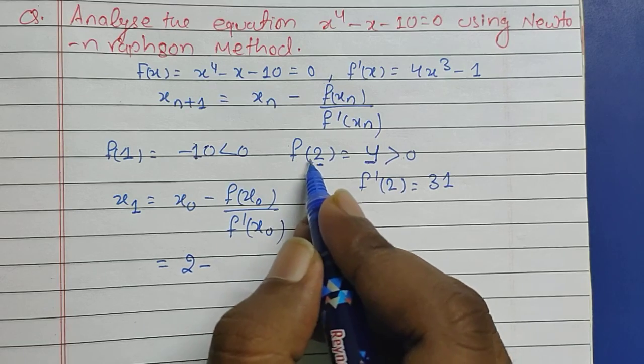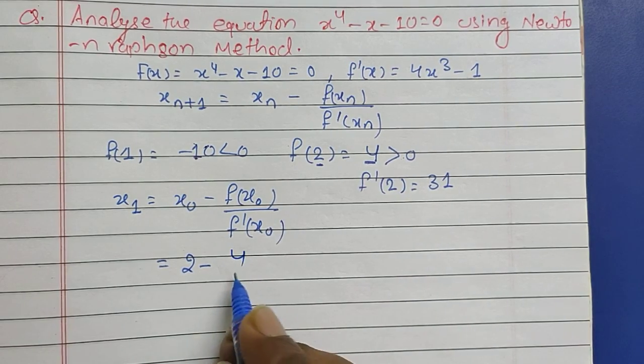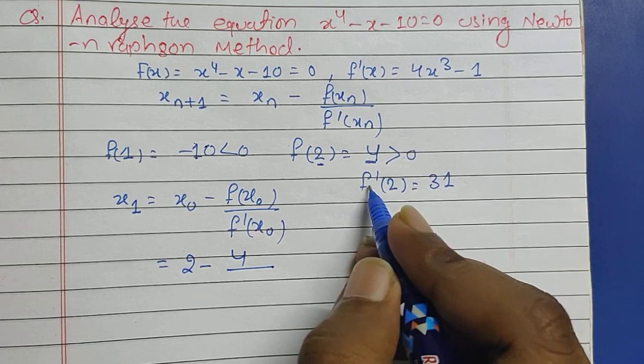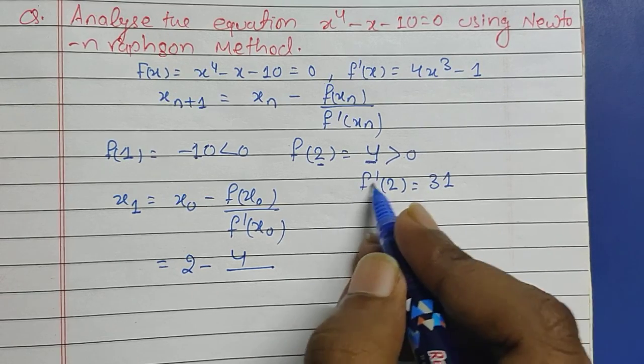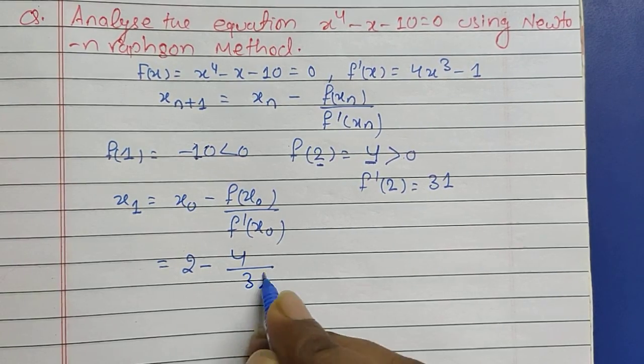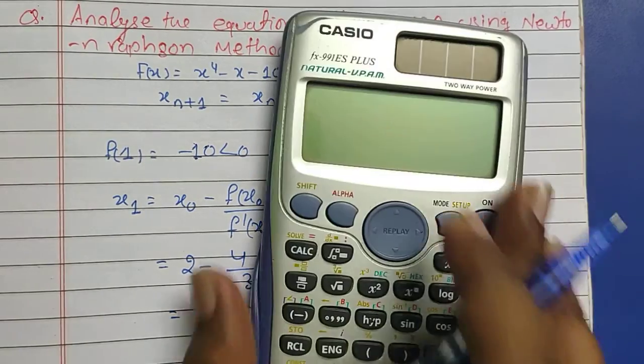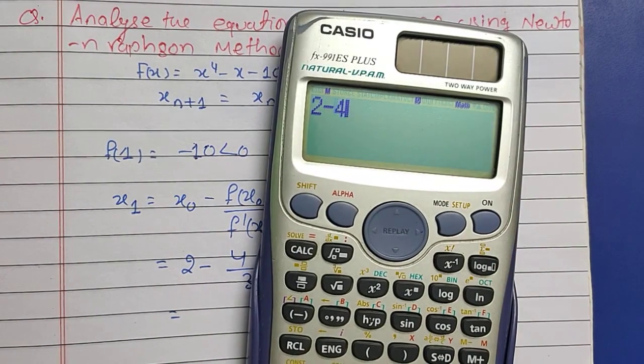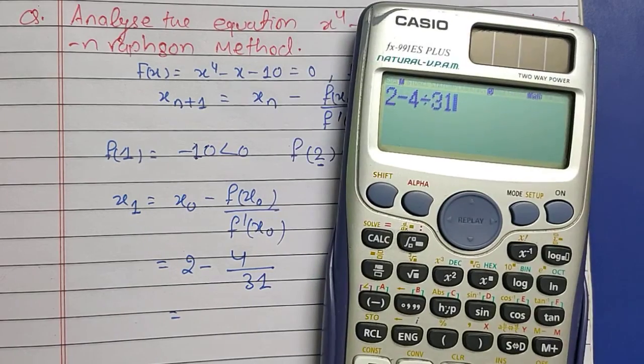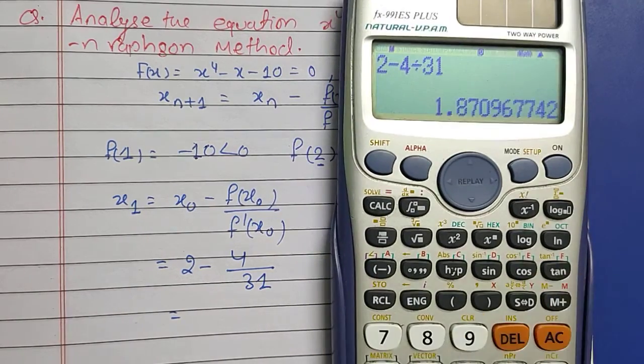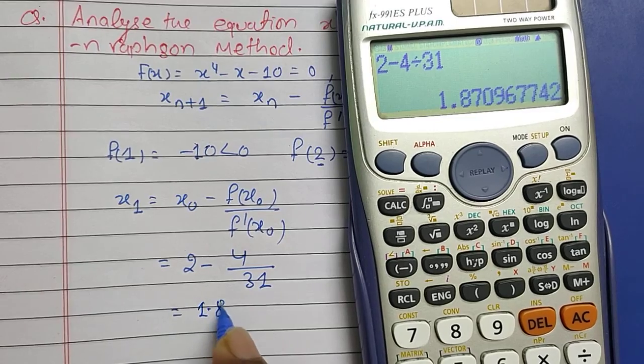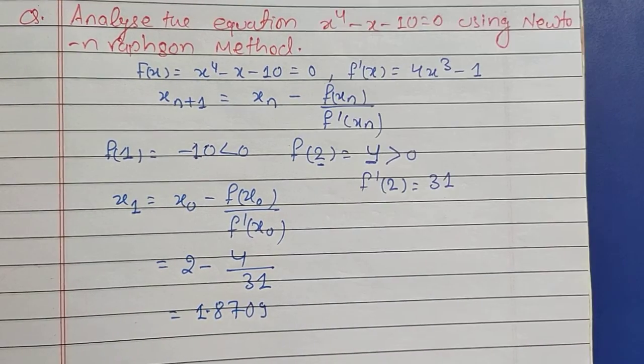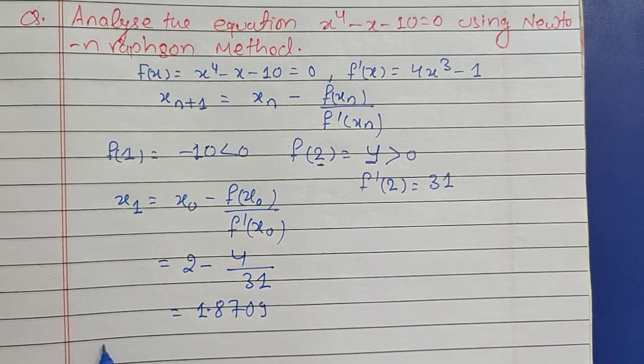f(2) is 4 by f'(2) is 31. So on solving this we will get 2 - 4/31, and here the answer is 1.8709.